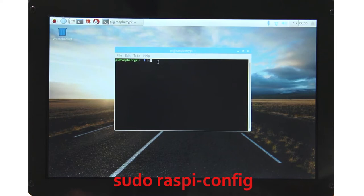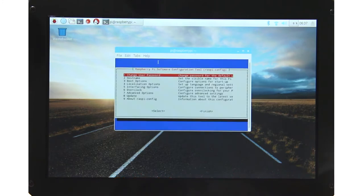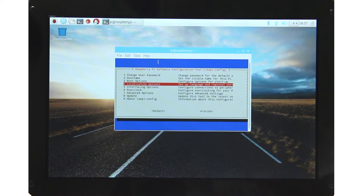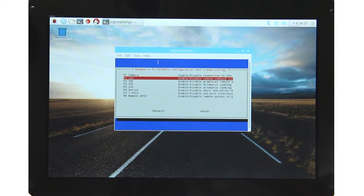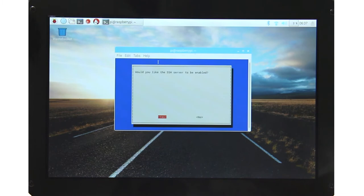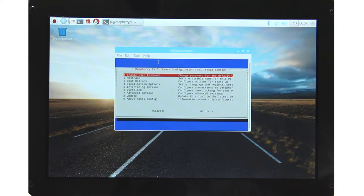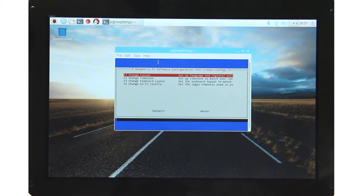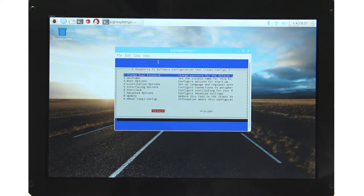Type in sudo raspi-config. In this raspi-config interface, go to interfacing options and SSH. Would you like to enable? Choose yes, and it will enable SSH so that we can remotely connect to Raspberry Pi. Then you can also do other changes like change your user password, change the hostname, or the localization options. Here you can change your keyboard layout. Then hit back and finish.